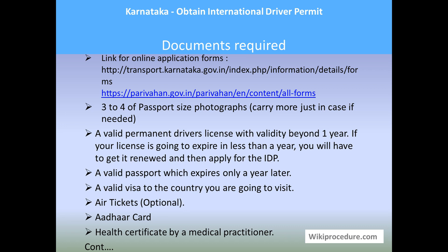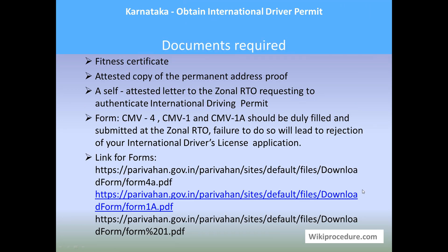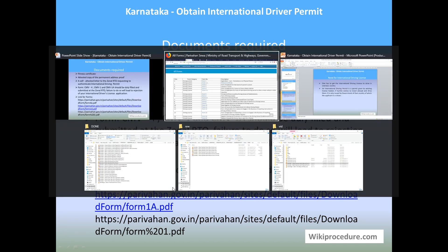A valid passport that expires only after a year must be provided. A valid visa to the country you desire to travel, air tickets (optional), a health certificate by a medical practitioner, a fitness certificate, an attested copy of the permanent address proof, and a self-attested letter to the zonal RTO requesting authorization for the international driving permit are all required. Forms CMV4, CMV1, and CMV1A must be duly filled and submitted at the zonal RTO; failure to do so will lead to rejection of your application.